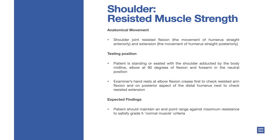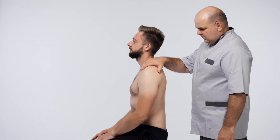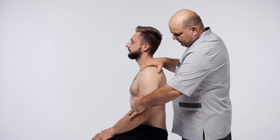Testing position: patient is standing or seated with the shoulder adducted by the body midline, elbow at 90 degrees of flexion, and forearm in the neutral position. Examiner's hand rests at the elbow flexion crease first to check resisted arm flexion, and on the posterior aspect of the distal humerus next to check resisted extension.